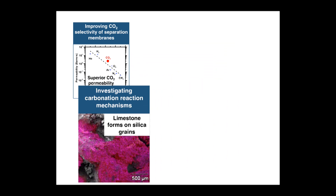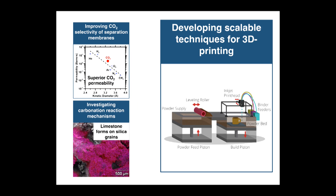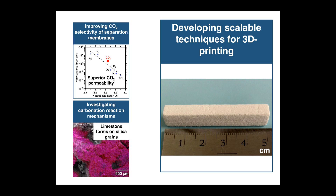Finally, we've been working on developing scalable processes for 3D printing of building materials. This is an example of a binder jetting printer, which deposits layers of an adhesive binder onto powders, layer by layer, to make a 3D object. We are looking at how to integrate this carbonation process with 3D printing, and to create material components with spatially varied mechanical properties.